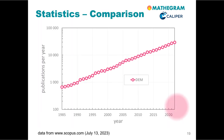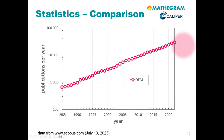I've also tried to make a comparison with other disciplines. Here you see the growth of publications per year — they are steadily increasing, and in the year 2022 we had approximately 16,000 publications dealing with the discrete element method.